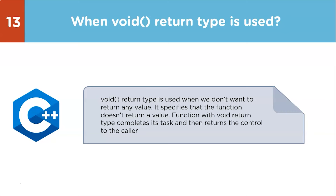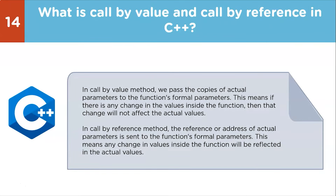Next question: what is call by value and call by reference in C++? Both are methods to pass values to functions. In call by value, copies of actual parameters are passed to formal parameters, so changes inside the function do not affect the actual values. In call by reference, the reference or address of actual parameters is sent, so any change inside the function is reflected in the actual values.